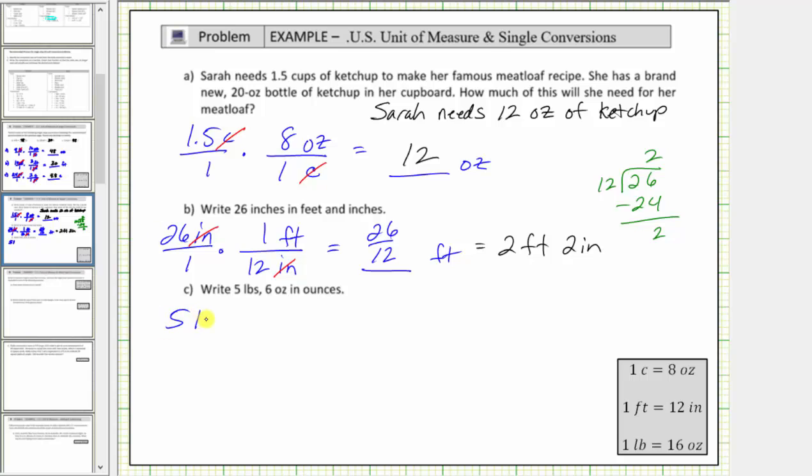So we'll convert 5 pounds to ounces first. This will not be the final answer though. We still have to add 6 ounces. We multiply by a unit fraction to convert pounds to ounces. The conversion we need is 1 pound equals 16 ounces. We want pounds to simplify out, and therefore we have pounds in the denominator, and ounces in the numerator.